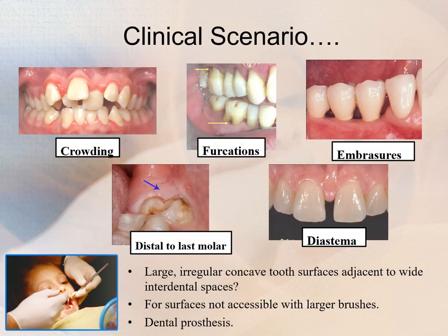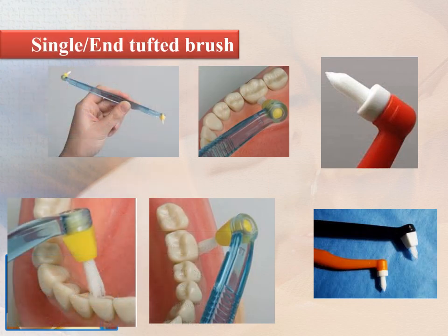For clinical scenarios involving crowding, furcations, embrasures adjacent to the last molar, diastema, large irregular concave root surfaces adjacent to wide interdental spaces, or surfaces not accessible with larger brushes and dental floss — end-tufted or single-tufted brushes are the aid of choice.